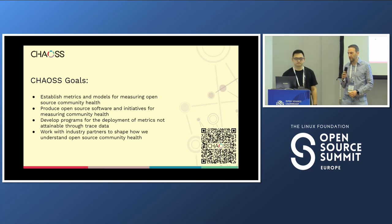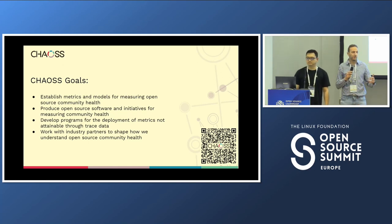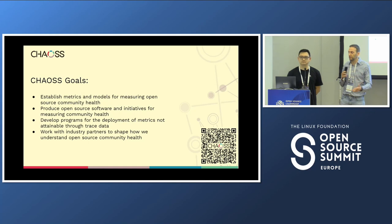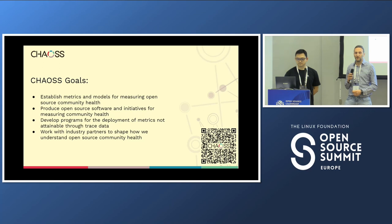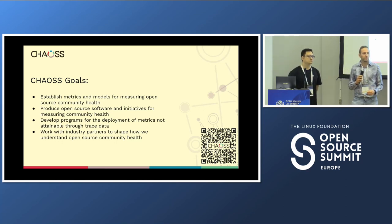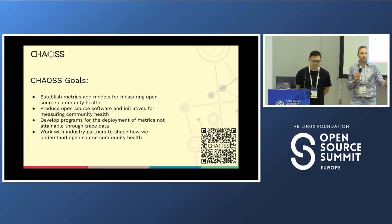Now we also have the software, which is part of the conversation today. The goals of the community are basically to define metrics and metrics models — we'll see some examples later — with the goal of measuring open source health. We want to produce open source software, bring industrial partners, universities, individuals, and open source foundations to help us define this.